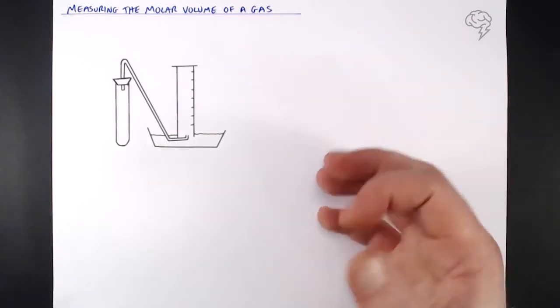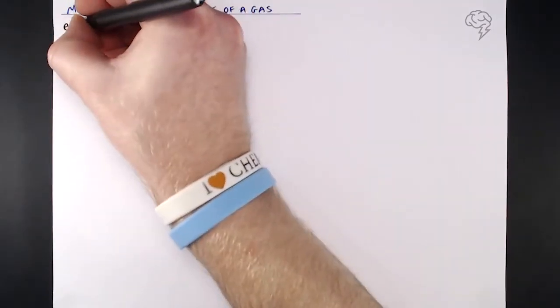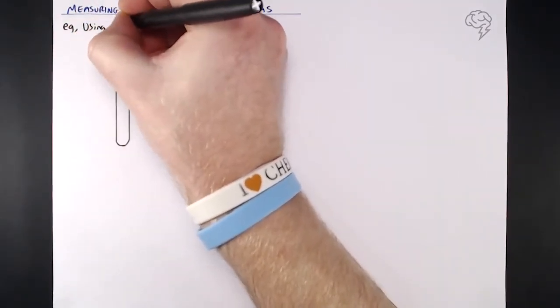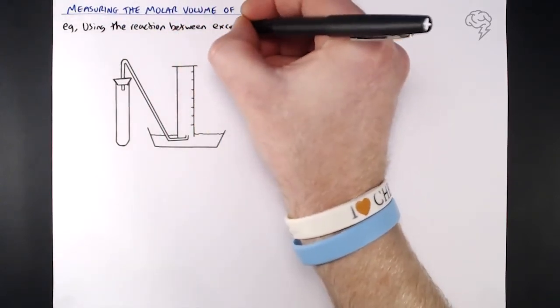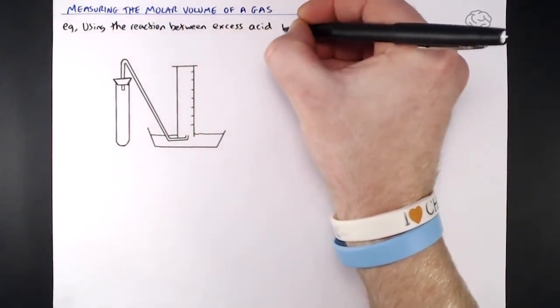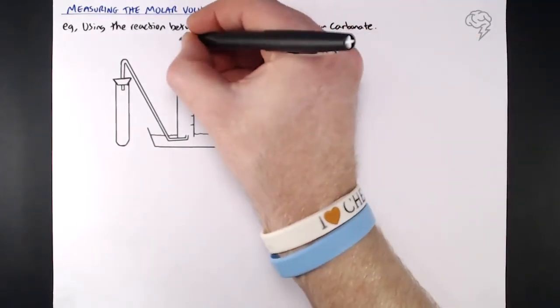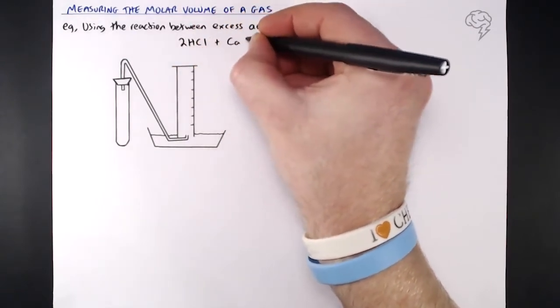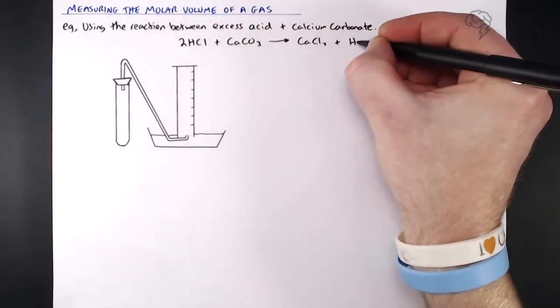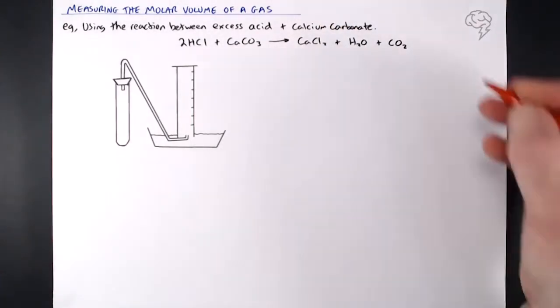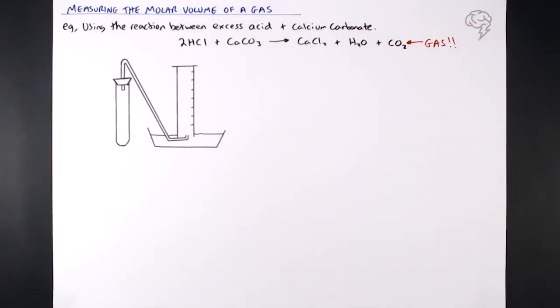We're going to use an example by reacting excess acid with calcium carbonate. In this example, we're just going to use a very straightforward reaction between excess acid, and make sure it's in excess, with calcium carbonate. So of course that's going to release a gas because it fizzes and releases CO2. The equation for this: 2HCl plus CaCO3 gives us calcium chloride CaCl2, H2O, and carbon dioxide. Carbon dioxide is of course our gas, and we need to measure the volume of gas given off.